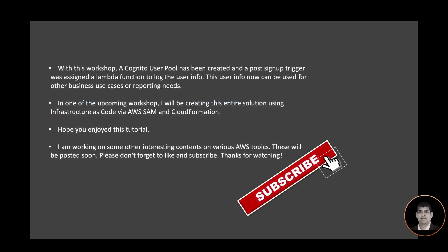With this workshop, a Cognito user pool has been created and a post signup trigger was assigned a Lambda function to log the user info. This user info can now be used for other business use cases or reporting needs. In an upcoming workshop I will be creating this entire solution using infrastructure as code via AWS SAM and CloudFormation. Hope you enjoyed this tutorial — I'm working on other interesting content on various AWS topics which will be posted soon. Please don't forget to like and subscribe. Thanks for watching.